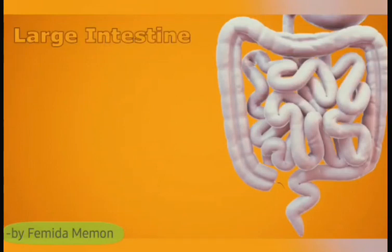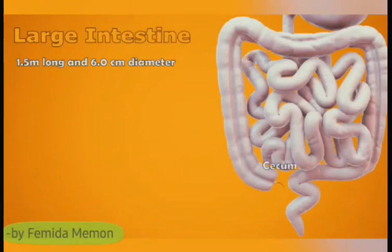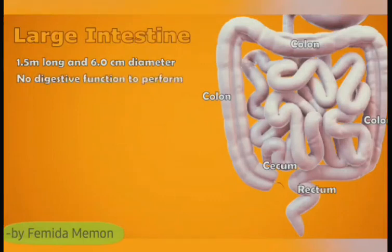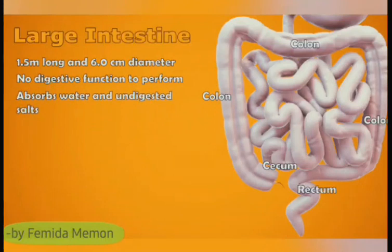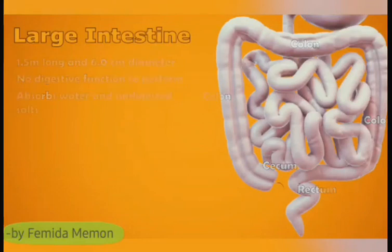Large intestine: The large intestine is about 1.5 meters long and about 6.0 centimeters in diameter, divided into 3 parts: caecum — at the beginning where it joins the small intestine; colon; and rectum — where the feces are stored and expelled from the body. The large intestine has no digestive function; it absorbs water as well as dissolved salts from the undigested food. The digested and absorbed food is utilized in the body in different forms and the products can be interconverted as per requirements.